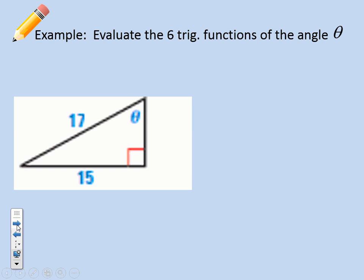Now let's take a look at evaluating the six trig functions of a labeled angle theta. You'd want to get this diagram in your notes. It's a right triangle labeled with a theta — that's the angle we're supposed to stand at. We need to set up all six trig ratios: sine, cosine, tangent, cosecant, secant, and cotangent.